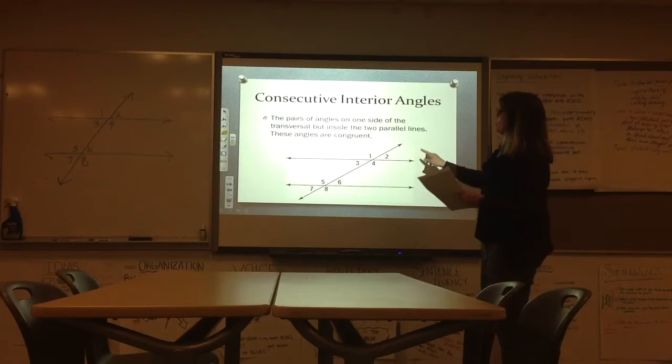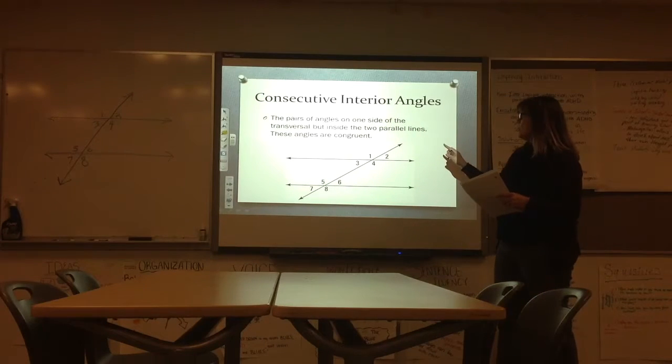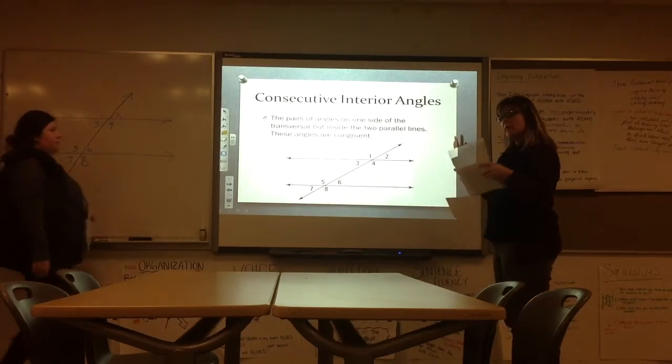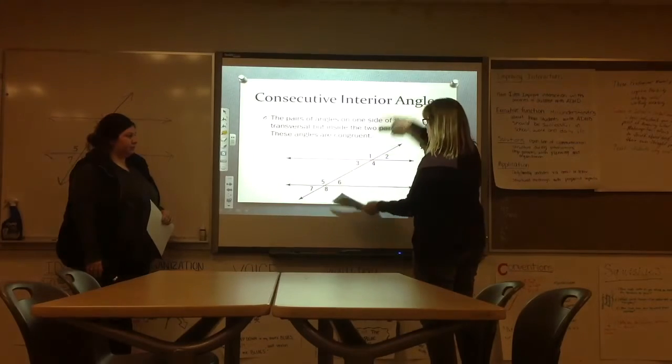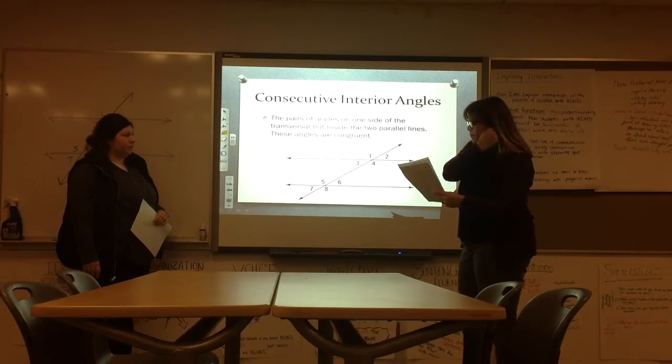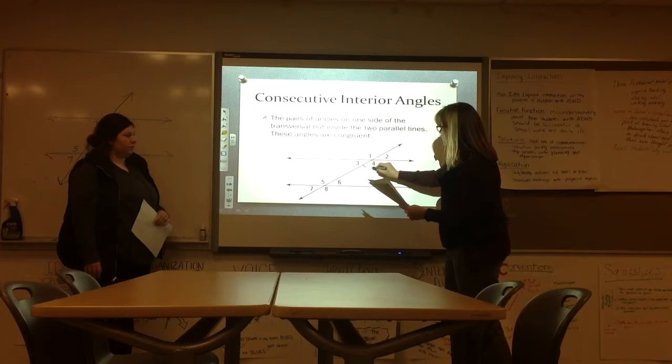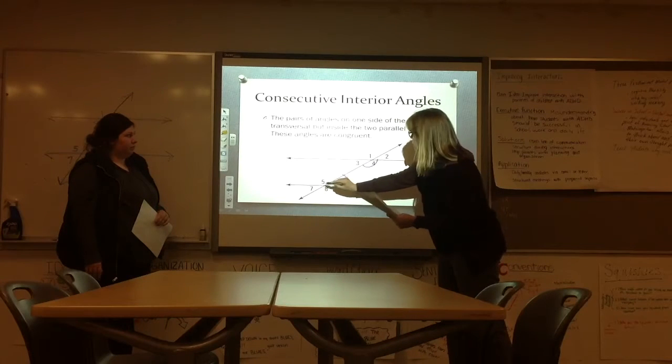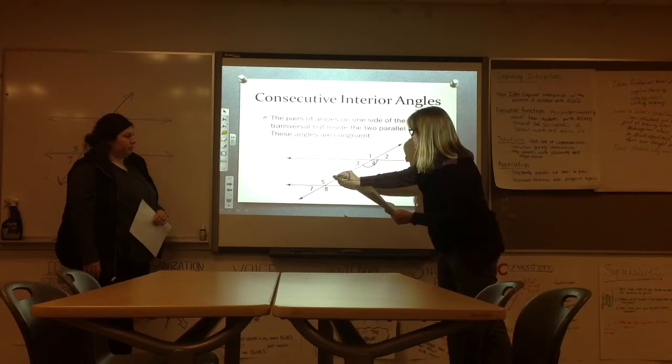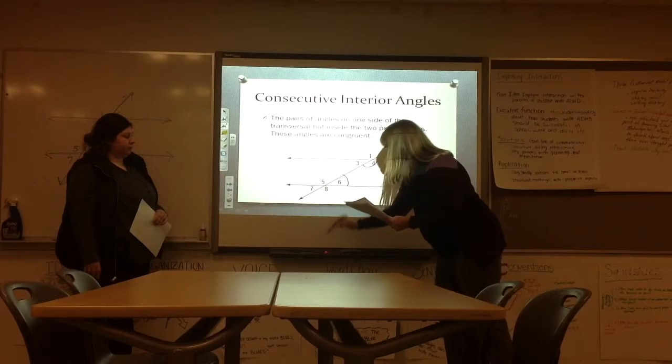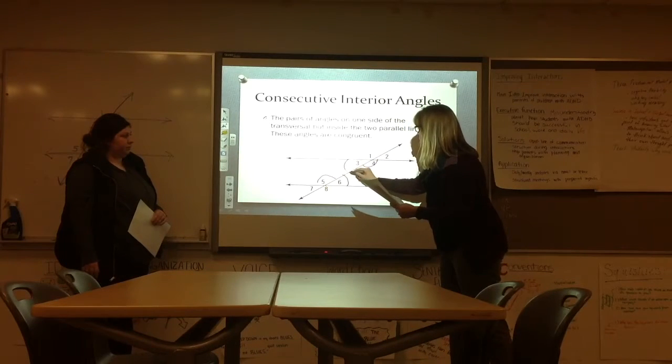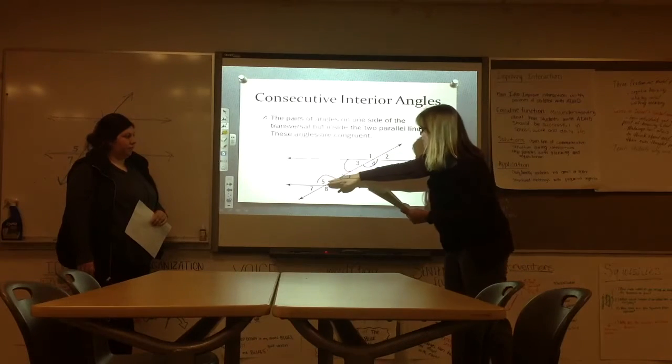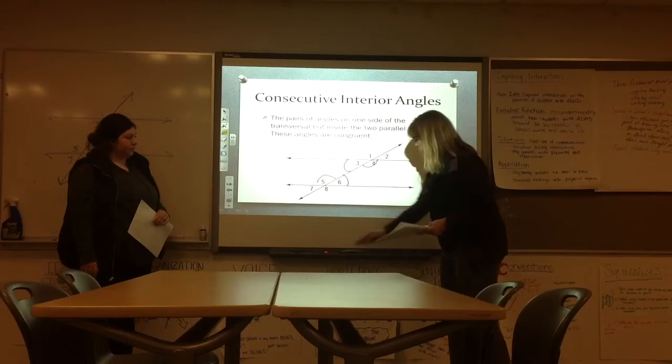Okay, so the next one we're going to do is consecutive interior angles. And these are similar to the one we did before where we have our parallel lines. And they're going to be inside the parallel lines. They're going to be in this spot. They're not going to be outside the parallel lines. So they're corresponding, and they would be this one and this one. And then the other ones would be 5 and 3. Because they're inside, angle 6 and 4 line up along the transversal line, as do 5 and 3. But they're both inside the parallel lines.